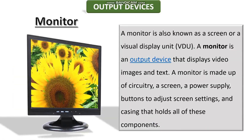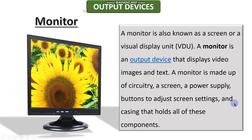Moving on to the next slide, we have our first output device — the monitor. A monitor is also known as a screen or visual display unit, or VDU. It is an output device that displays video images and text. We can see all kinds of videos, images and text on it. A monitor is made up of circuitry, a screen, a power supply, buttons to adjust screen settings, and casing that holds all these components.